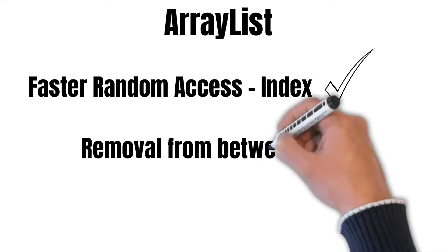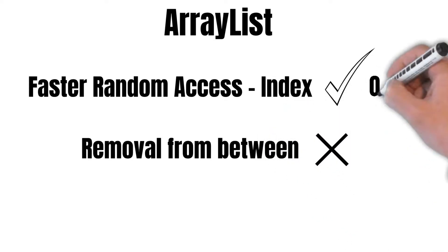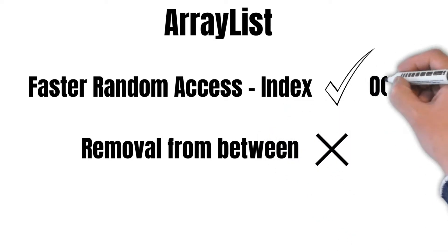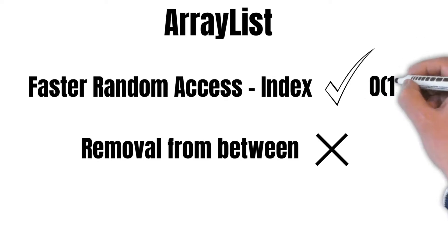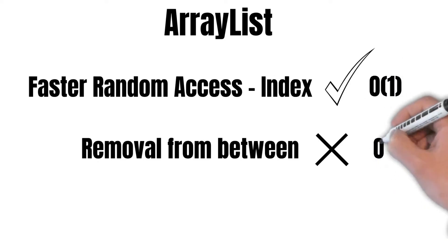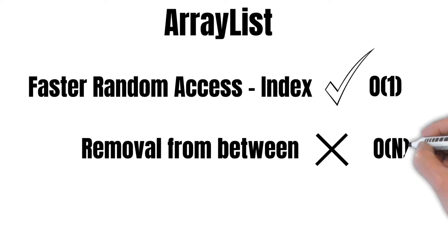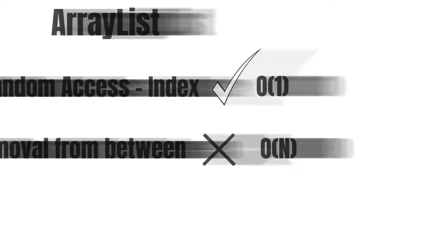In terms of Big O notation, the time complexity for accessing an element in an ArrayList is O(1), and the time complexity for adding or removing any element from an ArrayList is O(n).